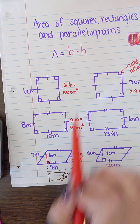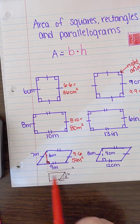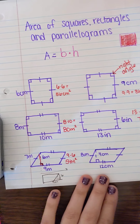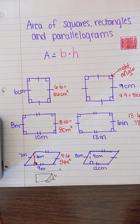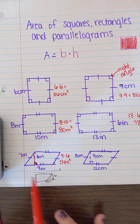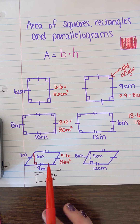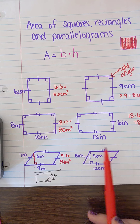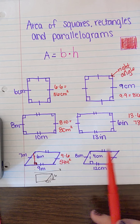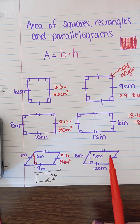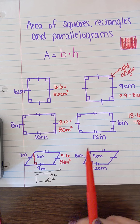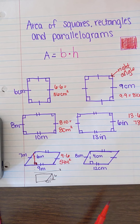We're able to use this formula because we can turn this parallelogram into a rectangle. I want you guys to use this as an example — can you tell me what the area is of this parallelogram? Use this as an example and see if you can find the area. I'll give you a little bit of time.